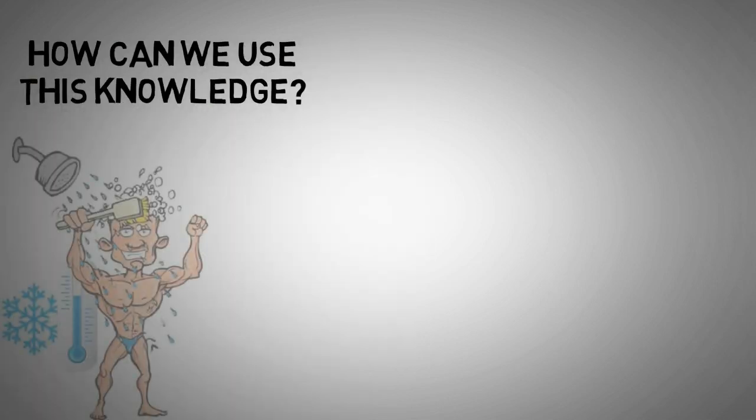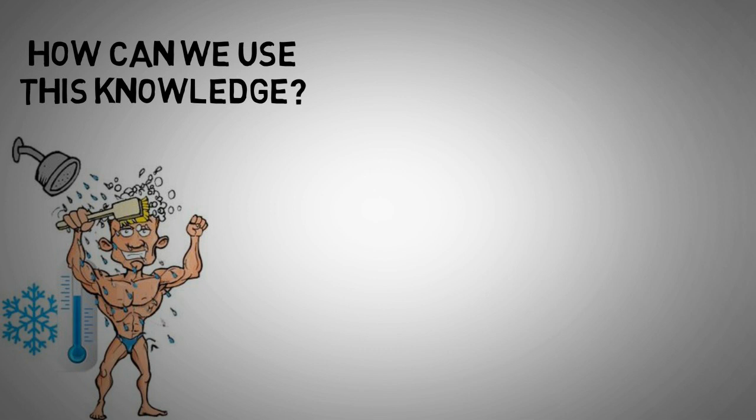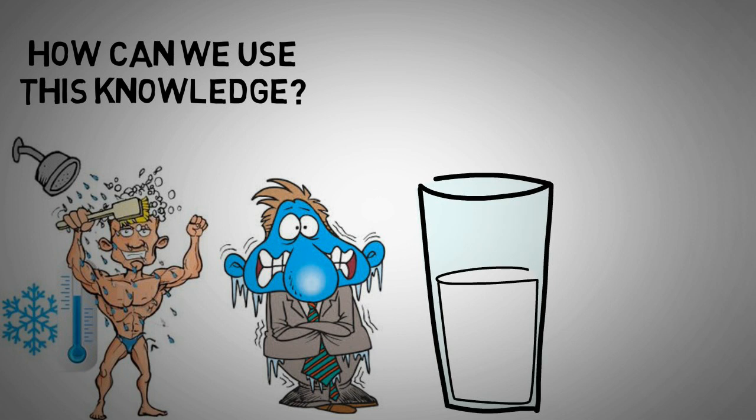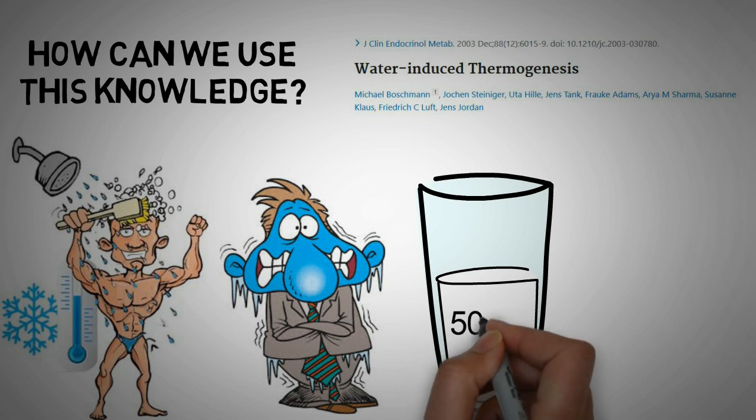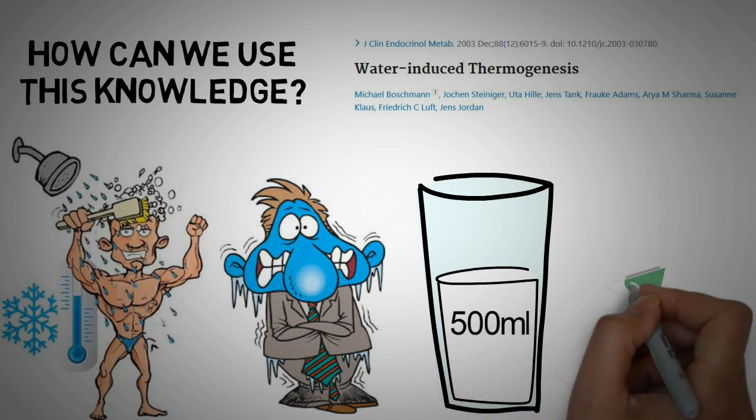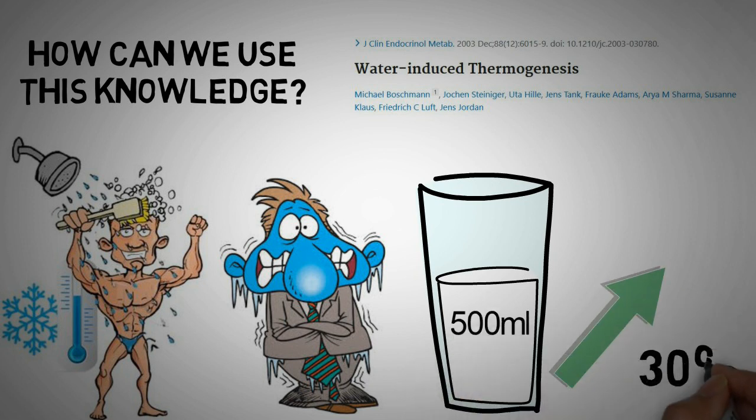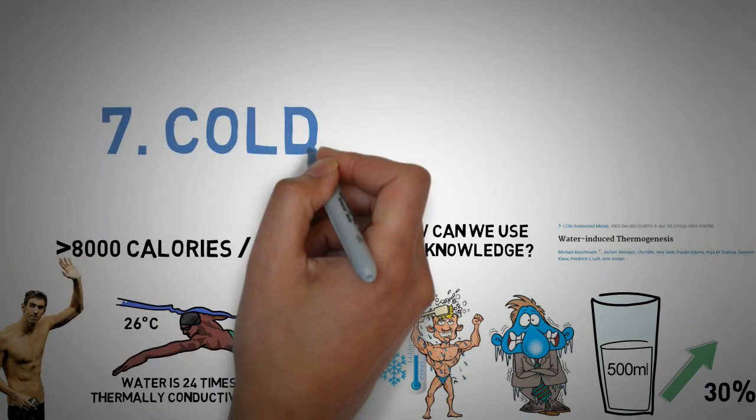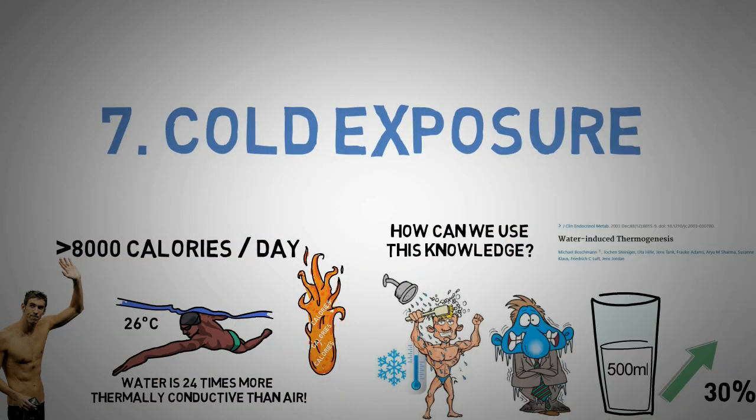So how can we use this knowledge? Cold showers, or maybe even ice baths for the tough ones. But also just going outside in the cold or already drinking ice cold water will make a difference. As an example, a study found that drinking 500ml of water increase metabolic rate by 30% for a short period of time, as the body needs to spend energy to heat up the water. So metabolism hack number 7 is cold exposure.